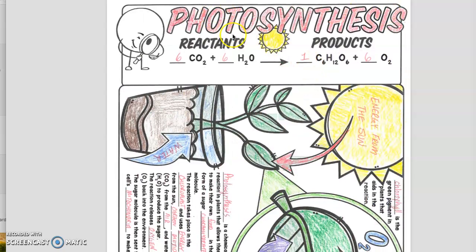Photosynthesis takes place in the plant, there is a chemical reaction that takes place. It starts on the left with these reactants of carbon dioxide and water. There are 6 of each of those.